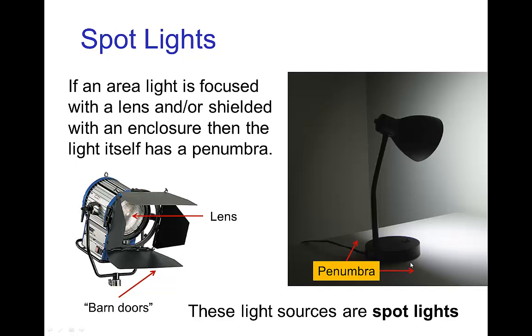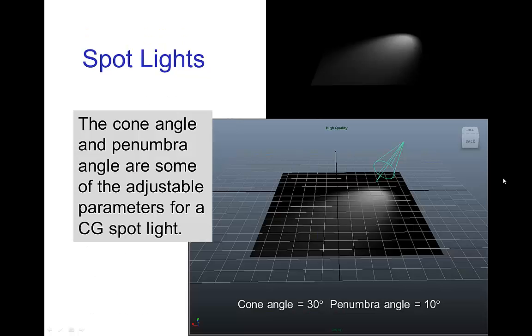With this table lamp, this edge that you see of this shadow is actually a penumbra, in this case mostly due to the enclosure of the light source. In computer graphics, these types of light sources, these spotlights, typically have separately adjustable cone angle for the light and a penumbra angle.